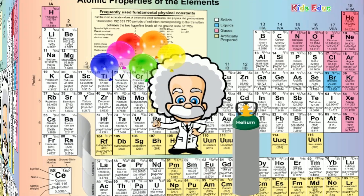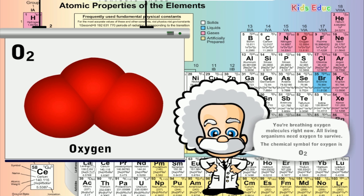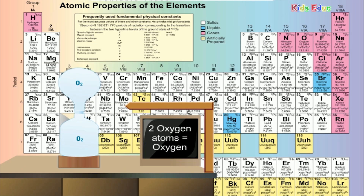You're breathing in oxygen molecules right now. All living organisms need oxygen to survive. At room temperature, oxygen is a gas. Oxygen is a colorless and odorless compound. Earth's atmosphere consists of about 20 percent oxygen. Earth is the only planet in the solar system with enough oxygen available to let us survive. Oxygen is the third most plentiful element in the universe by mass, after hydrogen and helium. The chemical symbol for oxygen is O2.